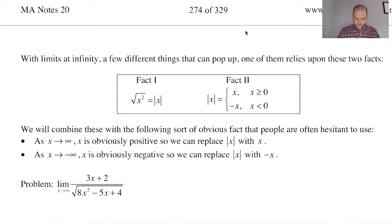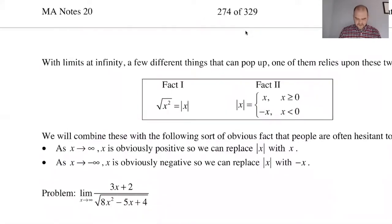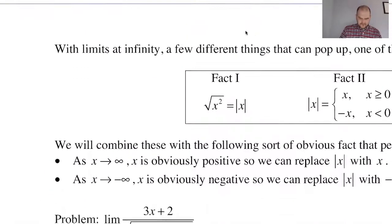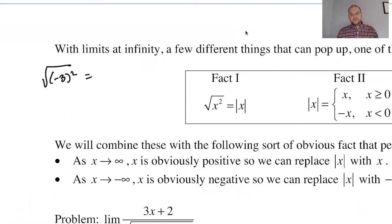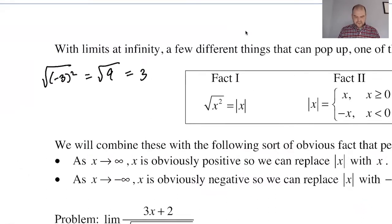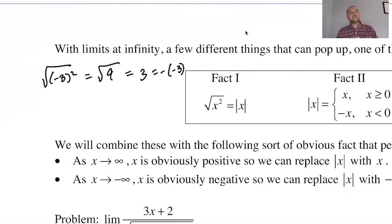Two facts we need to remember: the square root of x squared is defined to be the absolute value of x. The reason is if you had the square root of negative three squared, that's the square root of nine, which is three — and three is the absolute value of negative three, not negative three itself. So that absolute value is super important.